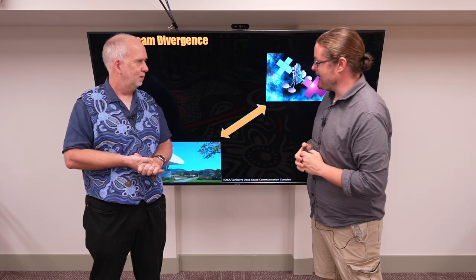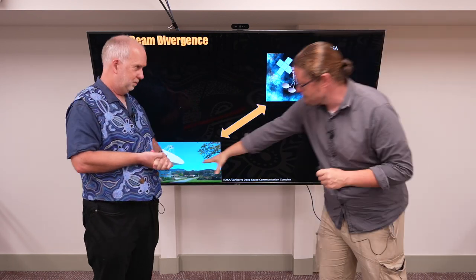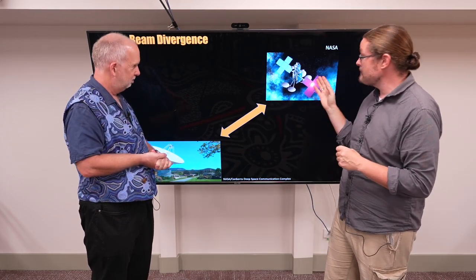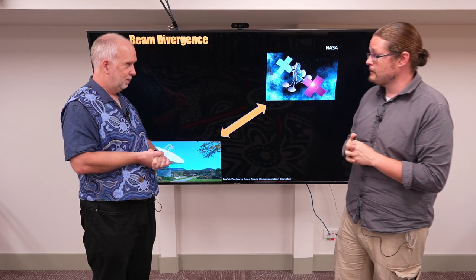So Paul, we have our giant dish. We know how we can send signals in space and receive signals in space. Works perfectly, right? Well, there's a few subtleties that happen as we're sending our signal into space.